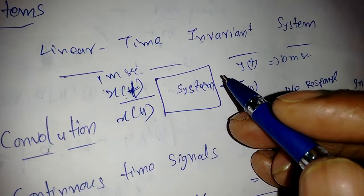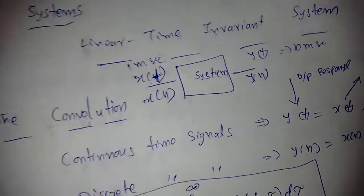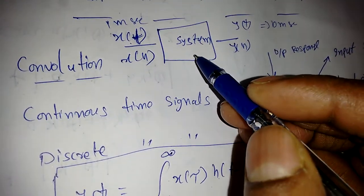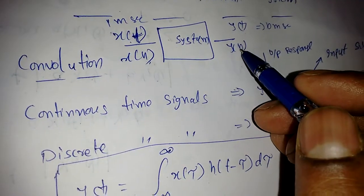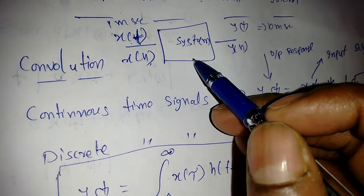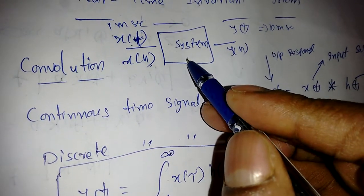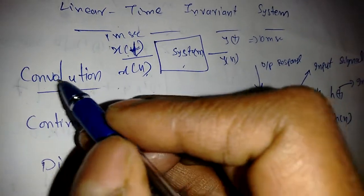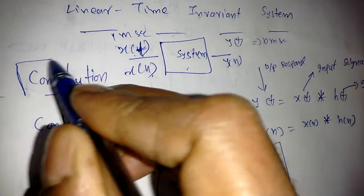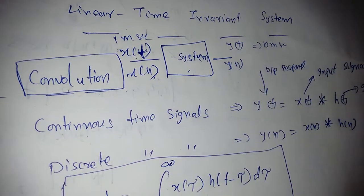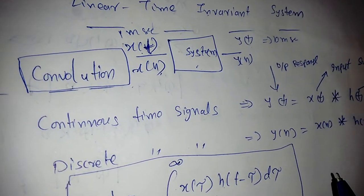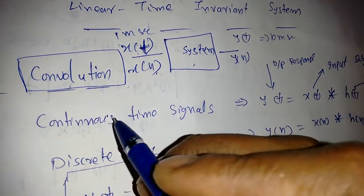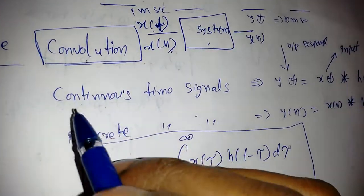Depending on time, the system should not vary — that is the meaning of time-invariance. Now, how to find the system response? If the input is given, how do we find the output? There is a process called convolution. For continuous-time signals we call it the convolution integral, and for discrete-time signals we call it the convolution sum.